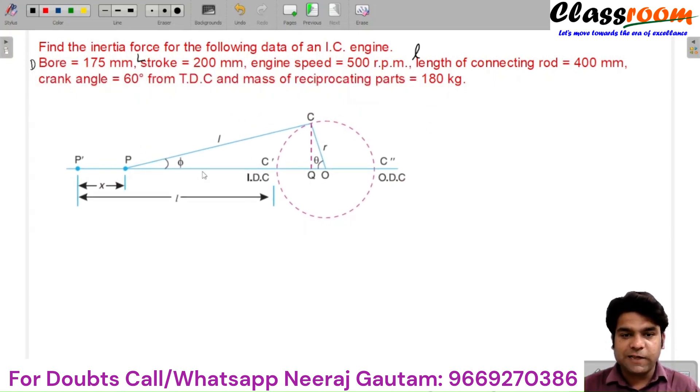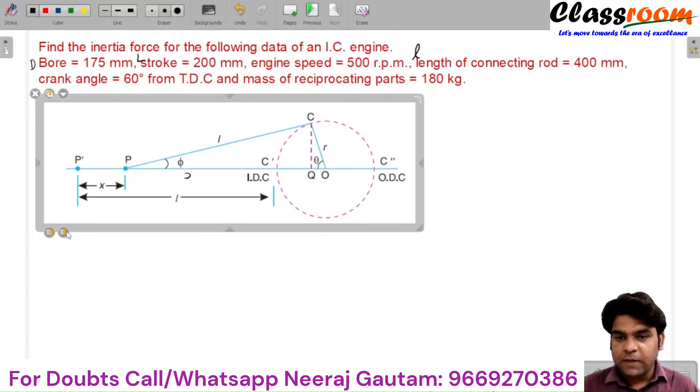Now, the length of stroke is basically when the crank pin C is at IDC, the piston position is P prime, and when the crank is rotated by 180 degrees and crank pin reaches to C prime position and the piston is here somewhere. This is the stroke length traveled by the piston.